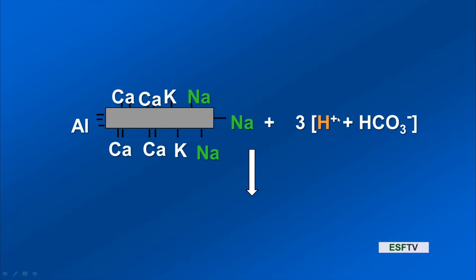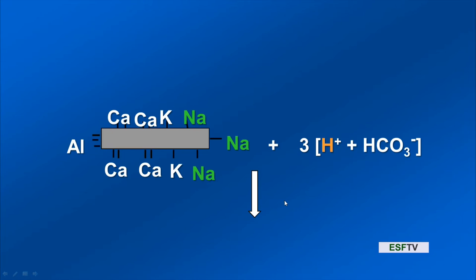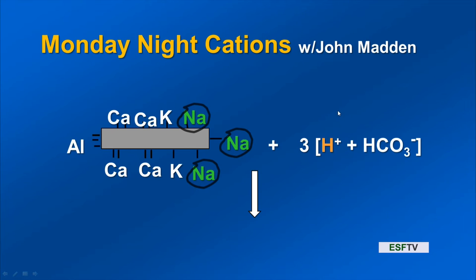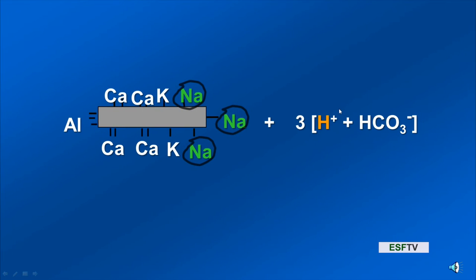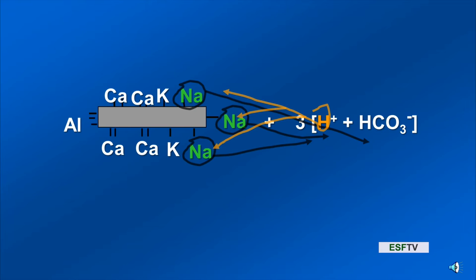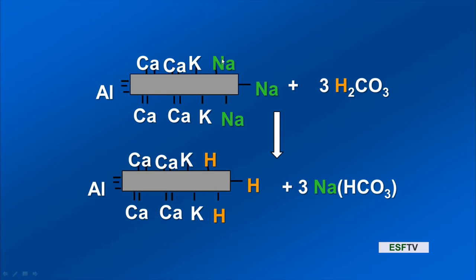Carbonic acid dissociates, giving us H⁺ and HCO₃⁻. The sodiums are going to leave — we displace sodiums, which are the least strongly held, and replace those with hydrogens. Those sodiums, plus-one, have been replaced by plus-one hydrogen — the cation exchange reaction. In solution we have sodium bicarbonate: the sodiums were kicked off and went into solution, balancing the bicarbonate anion. That's a fairly simple balanced cation exchange reaction.